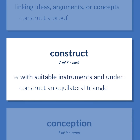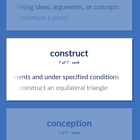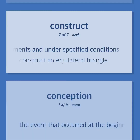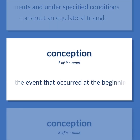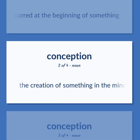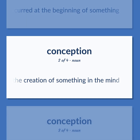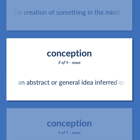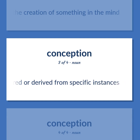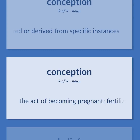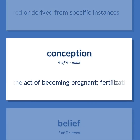Draw with suitable instruments and under specified conditions — construct an equilateral triangle. The event that occurred at the beginning of something. The creation of something in the mind. An abstract or general idea inferred or derived from specific instances.